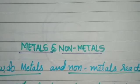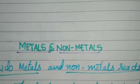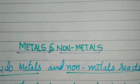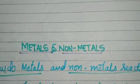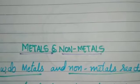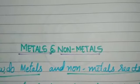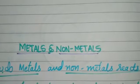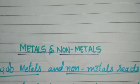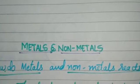Hello dear children, very good morning. As you all know, we are learning the chapter metals and non-metals. In that, we are learning chemical properties of metals. We have already learned three chemical properties of metals — how they react with oxygen, water, and acids. In today's class, we are going to learn about how metals and non-metals react.